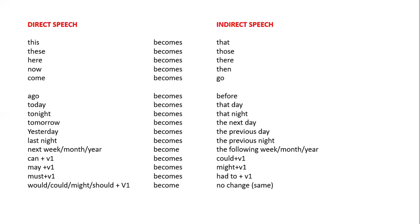Time and place related words also change: 'this' becomes 'that'; 'these' becomes 'those'; 'here' becomes 'there'; 'now' becomes 'then'; 'come' becomes 'go'; 'ago' becomes 'before'; 'today' becomes 'that day'; 'tonight' becomes 'that night'; 'tomorrow' becomes 'the next day'; 'yesterday' becomes 'the previous day'; 'last night' becomes 'the previous night'; 'next week/month/year' becomes 'the following week/month/year'. 'Can' becomes 'could', 'may' becomes 'might', 'must' becomes 'had to.'